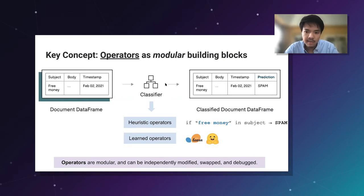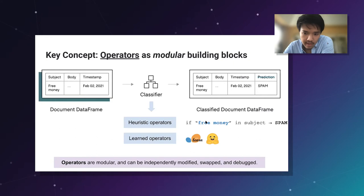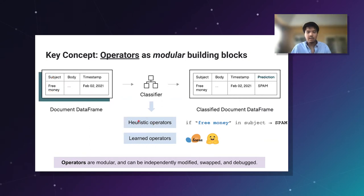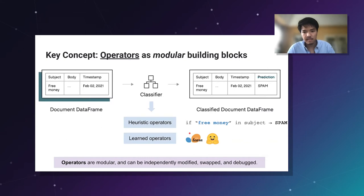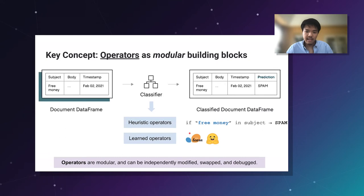One of the most important properties of operators is that they're modular — you can implement the same operator with the same type signature using different implementations. Take our email classification operator: you could start with a heuristic that says 'if the term free money shows up, classify it as spam' — a heuristic operator. Or you could use a learned operator based on an sklearn or Hugging Face model. To the platform it's the same operator; to the developer, it's a powerful abstraction for independently swapping and debugging individual building blocks.